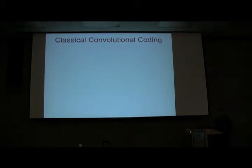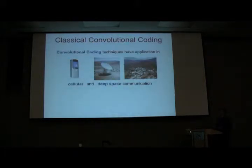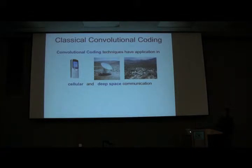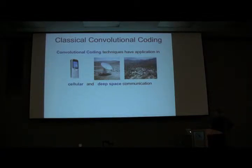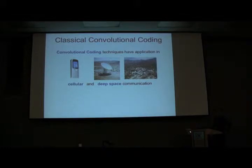We're going to talk about classical convolutional codes and why you would want to use them. This technique is very popular in cell phones, wireless communications, and a group at JPL is very famous for using this technique for communication with satellites. We'd like to take this and apply it to the quantum domain. There are several papers out there which already use this technique, but we've extended it to use entanglement assistance, where the sender and receiver share entanglement.